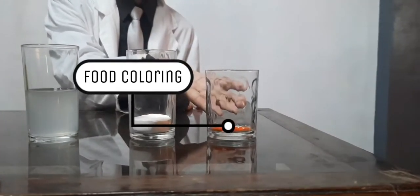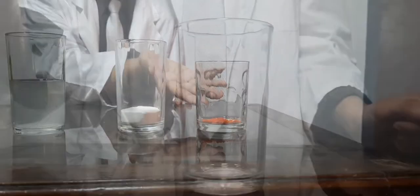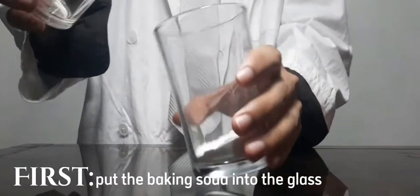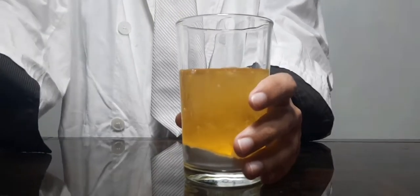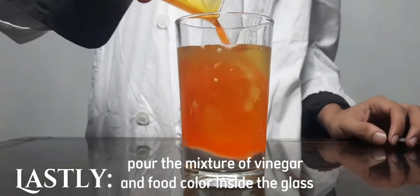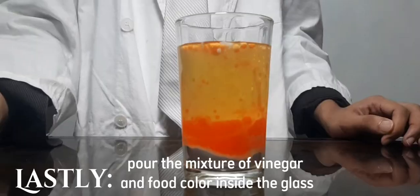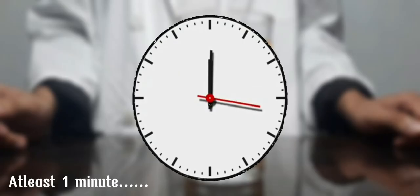First, put the baking soda into the glass. Next, add the oil and lastly pour the mixture of vinegar and food color inside the glass. We need to wait at least one minute to see its result.